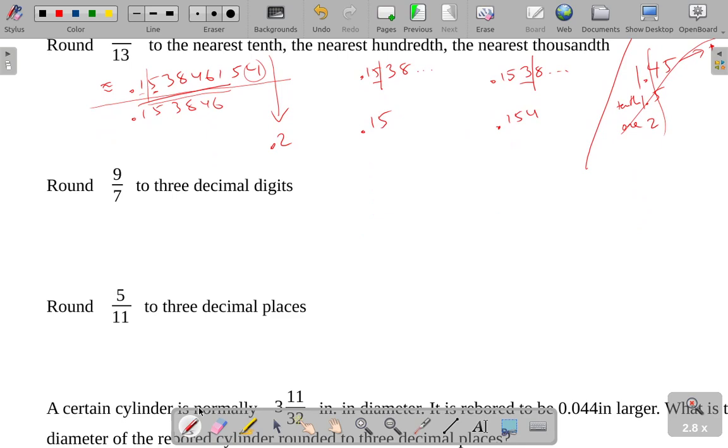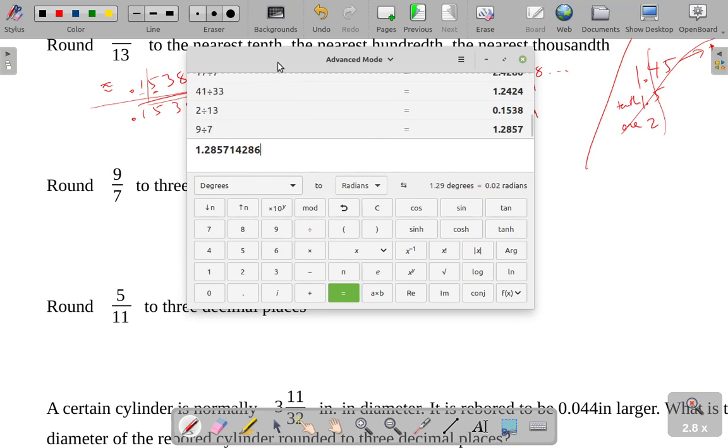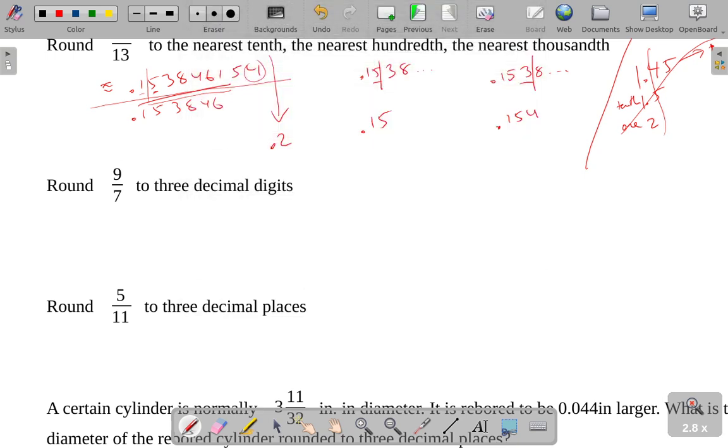All right. Let's round nine-sevenths to three decimal places. Let me get my calculator back here. Nine divided by seven. Three decimal places, it looks like that's where the five is. One-point-two-eight-seven... Or, two-eight-five-seven. Let me write this down. One-point-two-eight-five-seven-one-four, whatever. If we're rounding it to three decimal places, one-two-three, that would be where that seven is. But just to the right of it, if it's five or bigger, we get one-point-two-eight-eight.